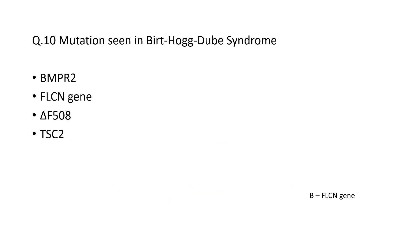Which mutation is seen in BHD (Birt-Hogg-Dubé) syndrome? The answer is the FLCN gene, which is the folliculin gene — a tumor suppressor gene. The other options: BMPR2 is seen in heritable pulmonary hypertension, delta F508 is cystic fibrosis, and TSC2 is tuberous sclerosis.